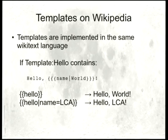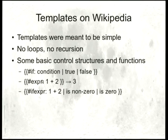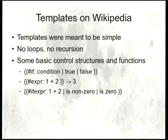Templates are implemented in the same Wikitext language as the articles themselves. We did argument expansion using triple braces. For example, if the template 'hello' contains 'hello {{{name|world}}}', the name here is the name of the argument and 'world' is the default if that argument doesn't exist. Invoking this template with no arguments will give you 'hello world'. If you invoke it with the argument name equals LCA, it'll give you 'hello LCA'. Templates were meant to be simple — there are no loops and no recursion. Under protest, we implemented some basic control structures like an if block and mathematical expression evaluation.